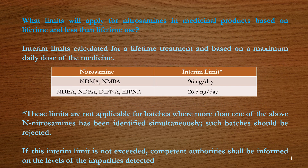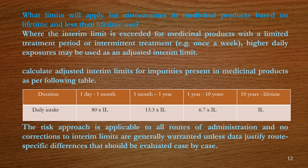What limits will apply for nitrosamines in medicinal products based on lifetime and less-than-lifetime use? Interim limits are calculated for lifetime treatment based on the maximum daily dose of the medicine. These limits are not applicable for batches where more than one of the above nitrosamines has been identified simultaneously — such batches should be rejected. If the interim limit is not exceeded, competent authorities shall be informed of the levels of impurities detected. Where the interim limit is exceeded for medicinal products with a limited or intermittent treatment period (e.g., once a week), higher daily exposures may be used as an adjusted interim limit.